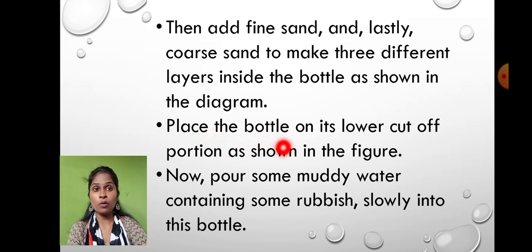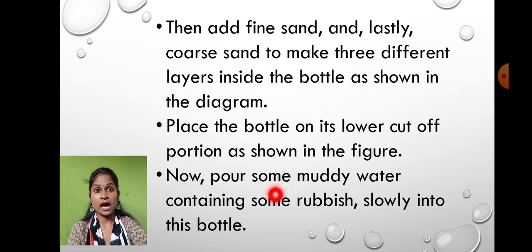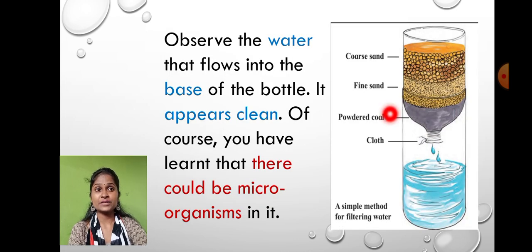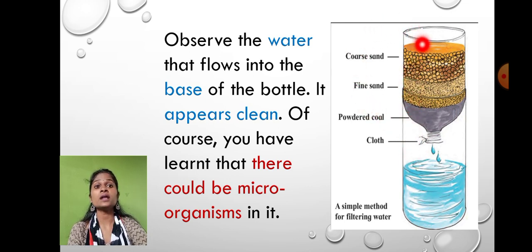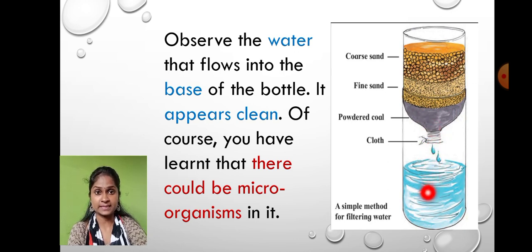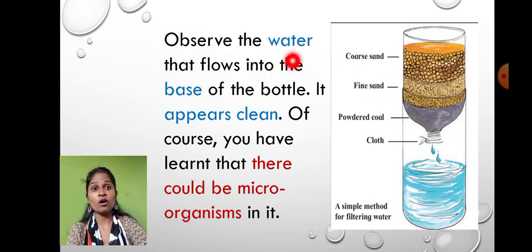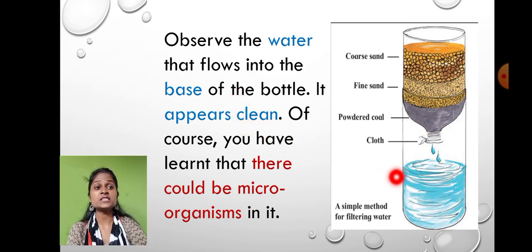Place the bottle on its lower cut-off portion as shown in the figure. Pour some muddy water containing rubbish slowly into the bottle. As you can see in the diagram, we have inverted the bottle, poured the rubbish water in, and the water is getting filtered, slowly dripping down step by step. After observation, the water that flows to the base of the bottle appears to be clean.